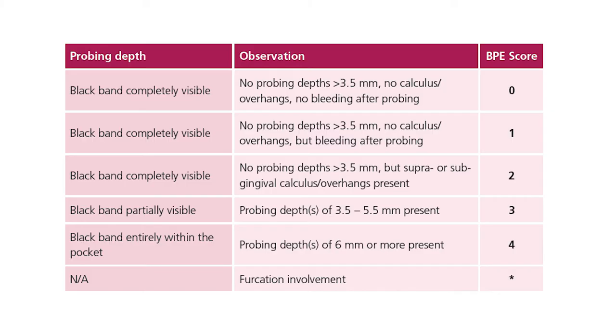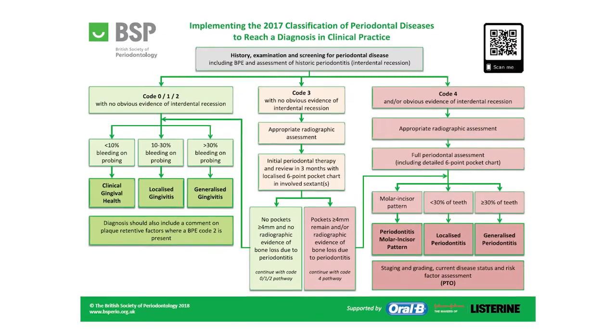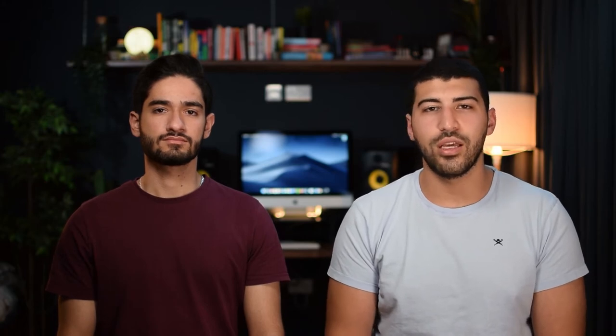The screening tool used is called a Basic Periodontal Examination (BPE), and if you're unsure of what that is, you can pause the video now and have a little look on your screen. Now that you've got a code for each sextant, the British Society of Periodontology have formed an in-depth sheet to follow, which we'll go through in this video. Keep in mind that this classification is also used internationally.